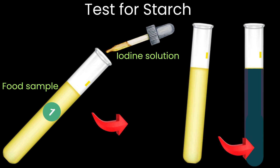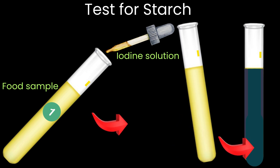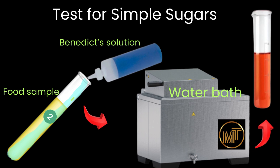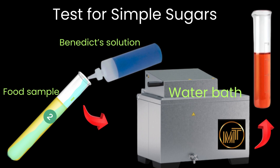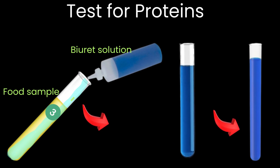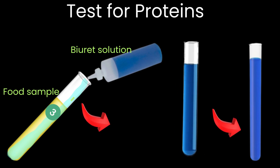In test tube one, you add a few drops of iodine solution and stir. If starch is present, the solution turns blue-black. In test tube two, you add Benedict's solution — the same volume as the food sample — and place the test tube in a water bath at 80 degrees Celsius. A brick-red precipitate indicates the presence of simple sugars like glucose.